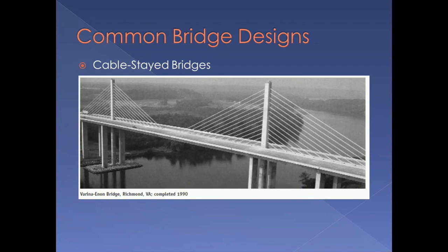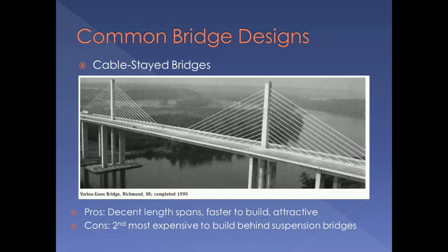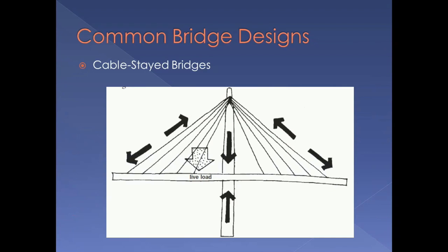The last type of bridge we'll look at are cable-stayed bridges. This is the Verena-Enon Bridge in Richmond, Virginia. The pros of cable-stayed bridges are that they can span decent sized lengths, they're faster to build, and they're thought to be attractive. However, they're the second most expensive type of bridge to build, behind only suspension bridges. Lastly, we'll look at how the forces are distributed on a cable-stayed bridge.